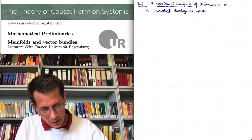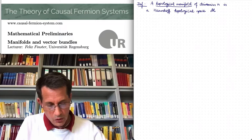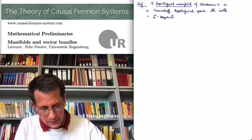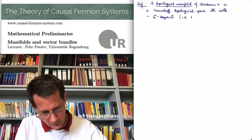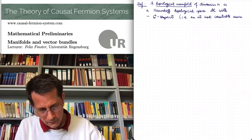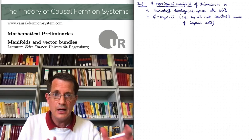It is a topological space with the Hausdorff property, and we denote this topological space by curly M. Moreover, we assume that this topological space is sigma-compact. This simply means that M can be written as an at most countable union of compact sets. So far it's a topological space with nice properties: Hausdorff and sigma-compact.